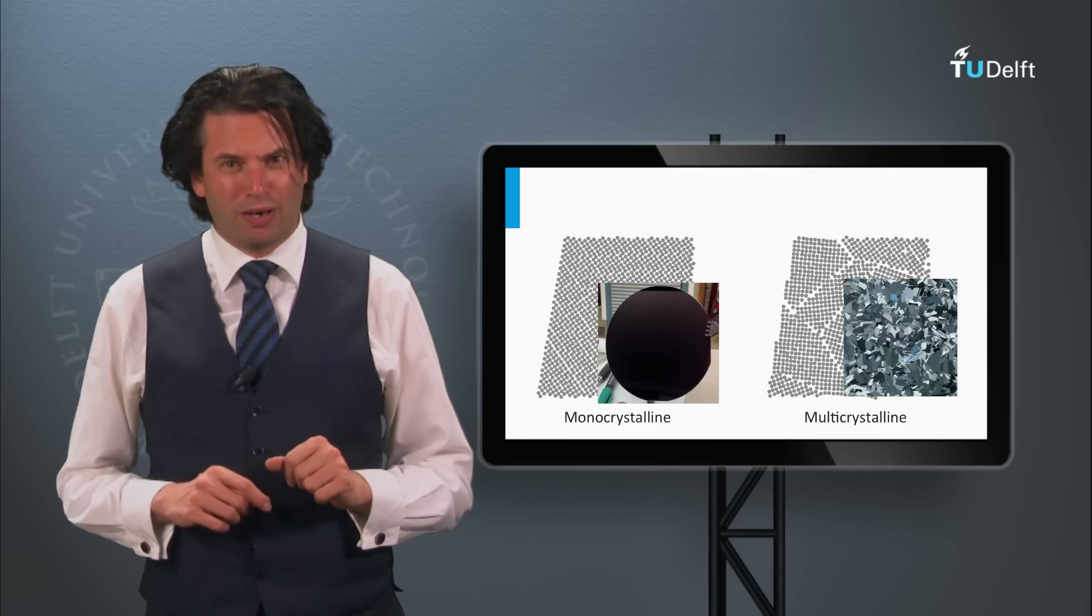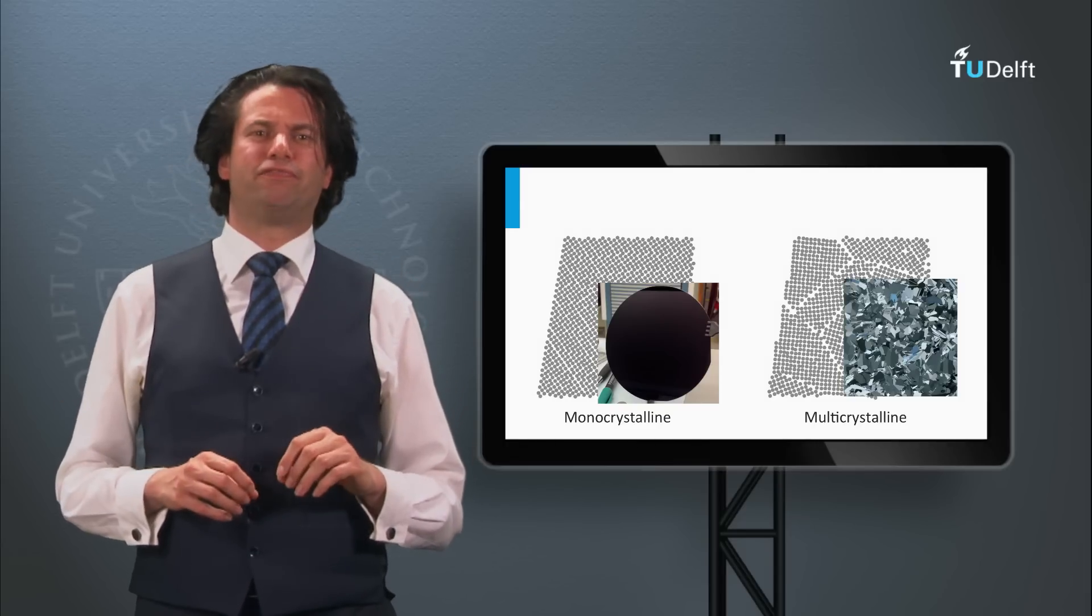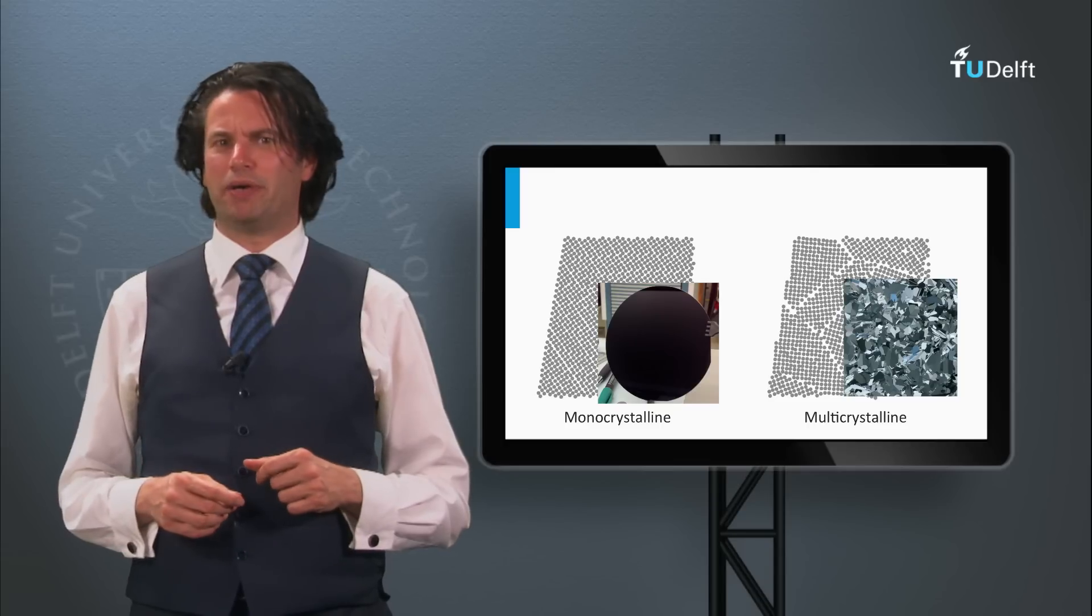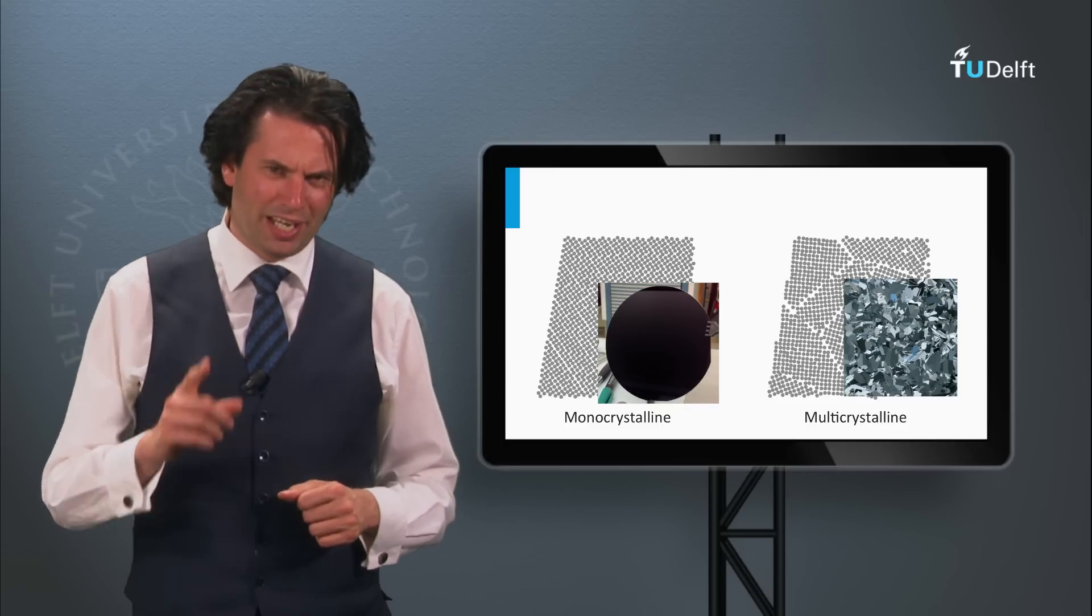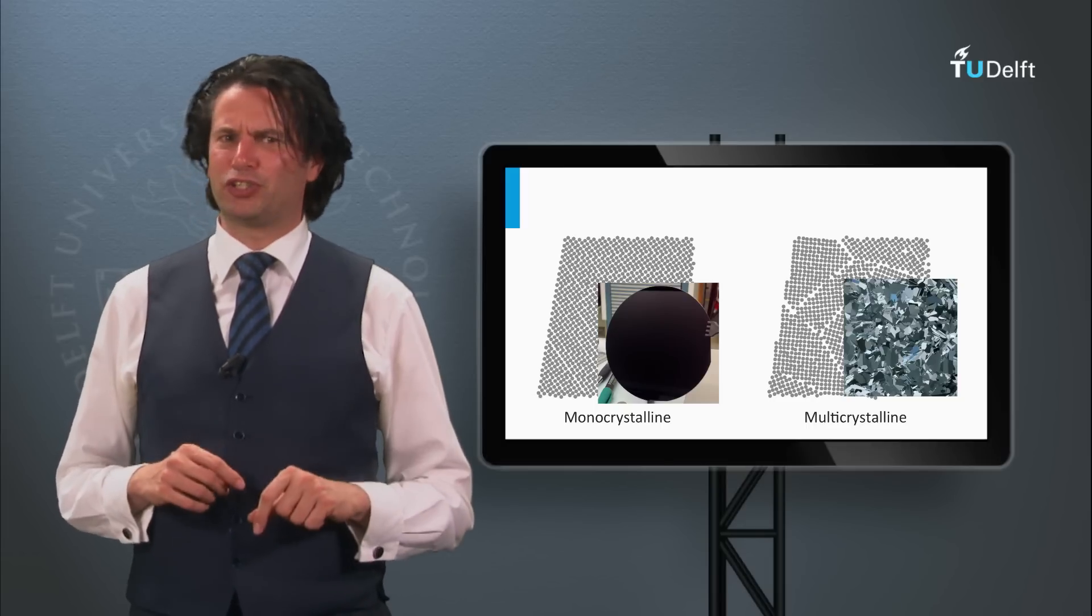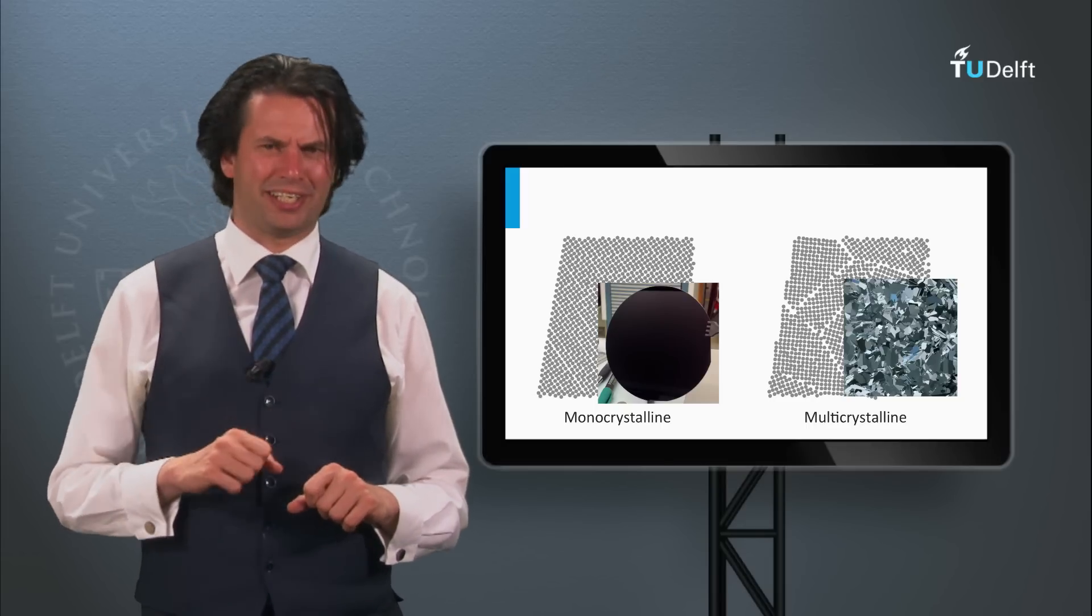In the previous block we discussed various technological aspects on crystalline silicon wafer-based PV technology. In this block I will give you three examples of highly efficient solar cells based on crystalline silicon wafers.